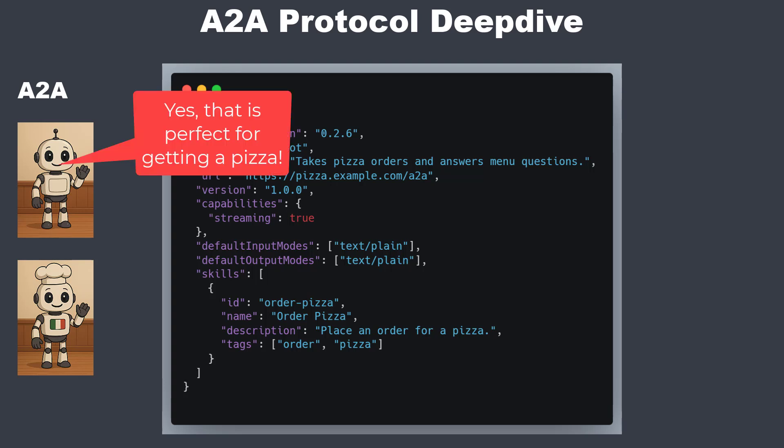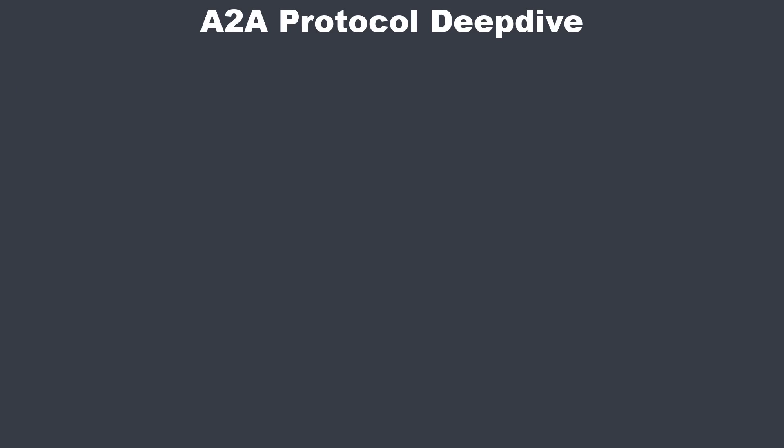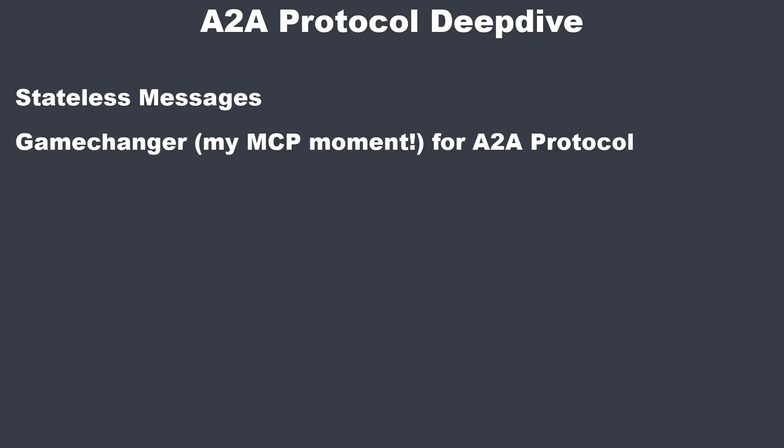After the customer has studied the menu, they can place an order. And here A2A offers two fundamentally different paths. The first one is stateless communication — this is an absolute game changer for simple integrations. For me, this is like the MCP moment of A2A, because just as the model context protocol simplified tool usage by providing a stateless alternative, A2A allows that now too.